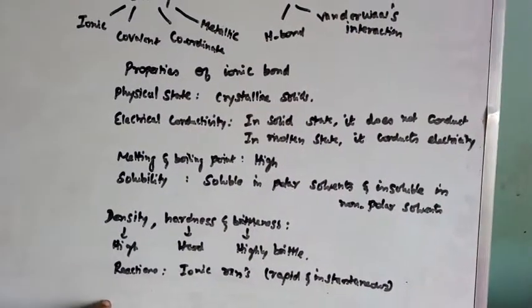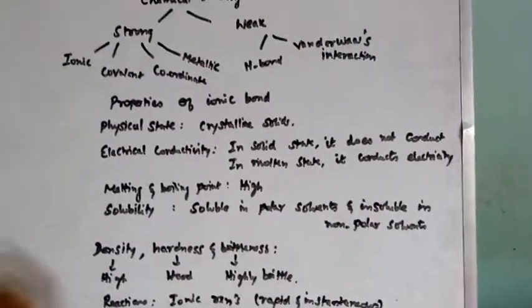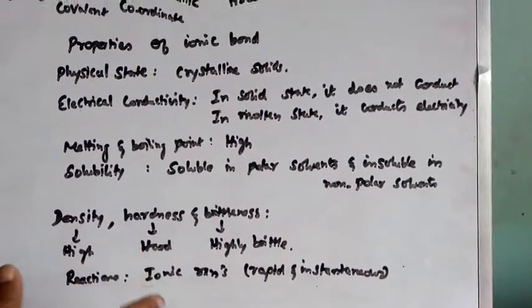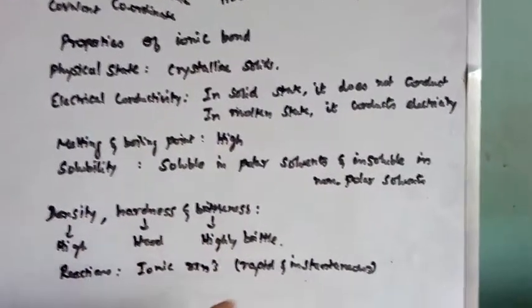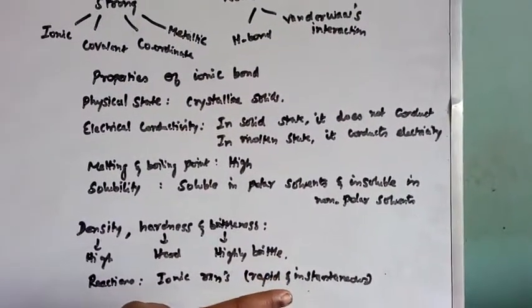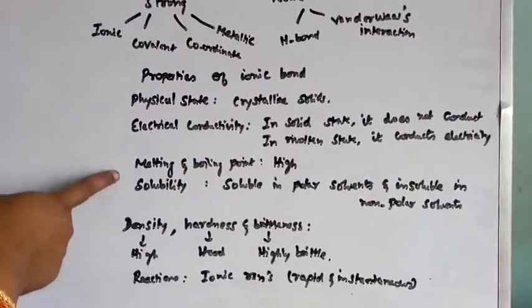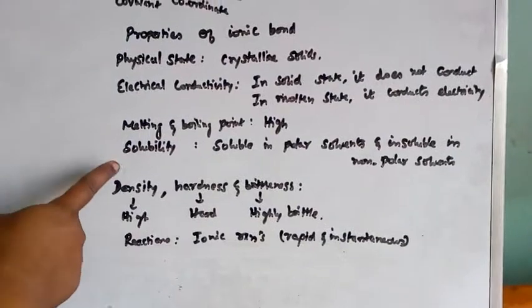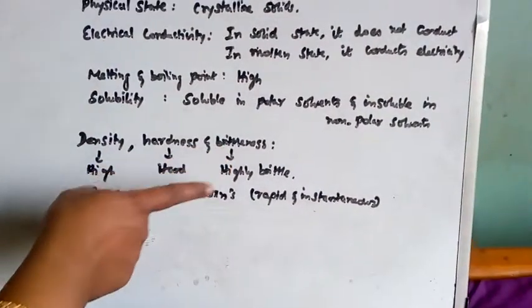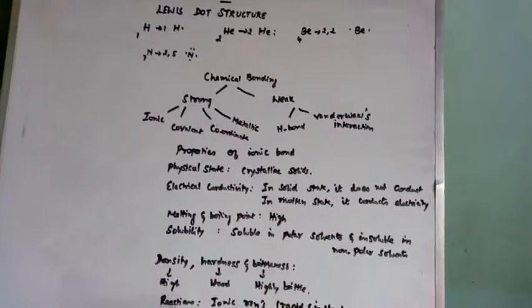Final property is reactions. Ionic compounds generally undergo ionic reactions. So reactions will be rapid, quick and instantaneous. What are the properties of ionic compounds? Physical state, electrical conductivity, melting and boiling point, solubility, density, hardness and brittleness and reactions. With this, we will complete today's class, students.